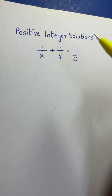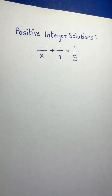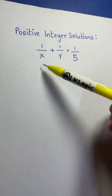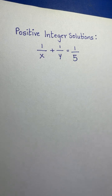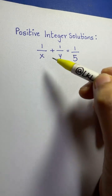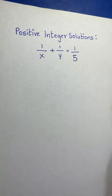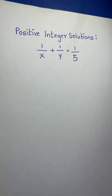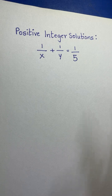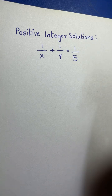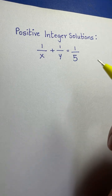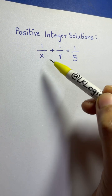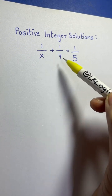Hi everyone. Here we are going to solve for positive integer solutions for this equation: 1/x + 1/y = 1/5. As you can see, x and y are in the denominators and 5 is also in the denominator. The left-hand side is a cyclic symmetric formula and we have to solve for x and y.